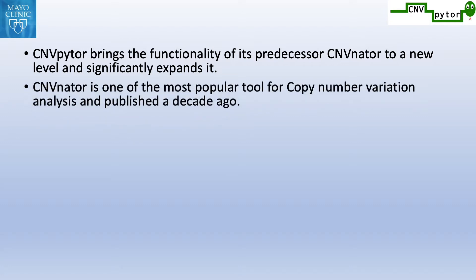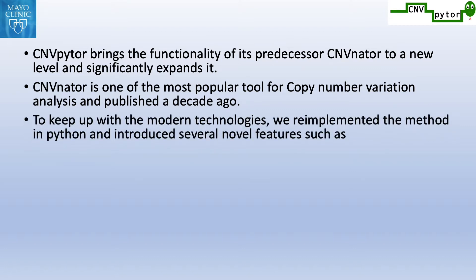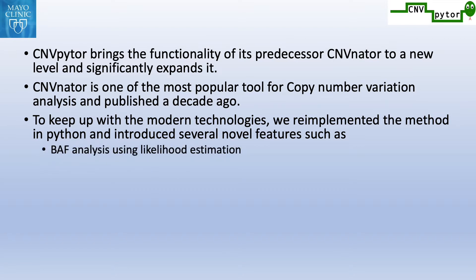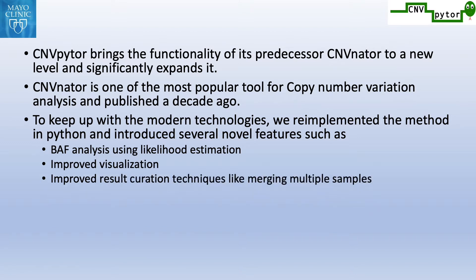CNB-Nator is one of the most popular copy number variation analysis tools, published a decade ago. To keep up with modern technologies, we re-implemented the method in Python and introduced several novel features such as BAF analysis using likelihood estimation, improved visualization, improved result curation techniques like multiple-sample merging, integration to genome browser, and many more.